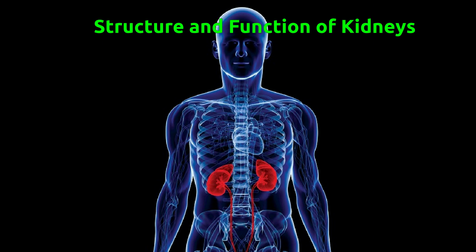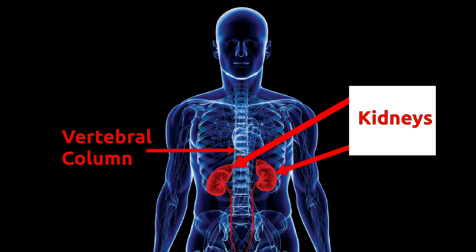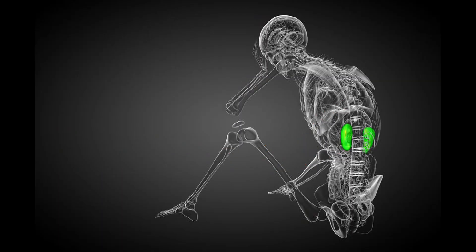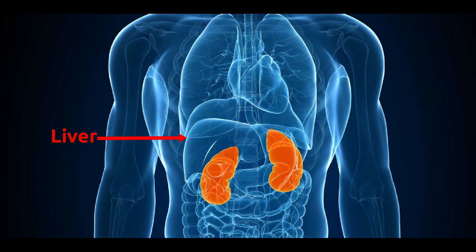In this video we will learn about the structure and functions of the kidney. Our body has two kidneys which are located inside the abdomen on either side of the vertebral column. Kidneys are located against the posterior abdominal wall and are closer to the back than the belly. The right kidney is slightly on the lower side due to the presence of the liver.